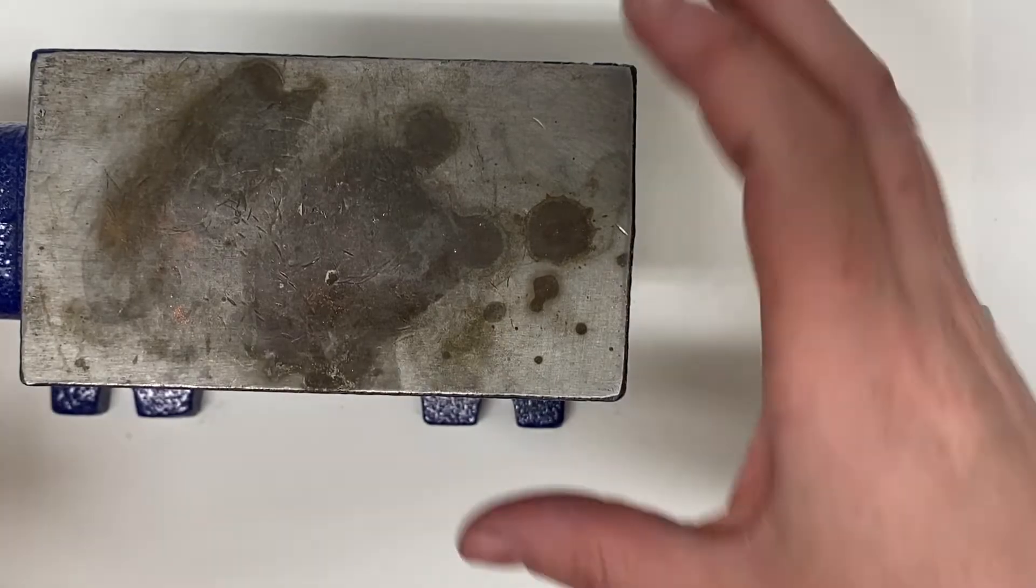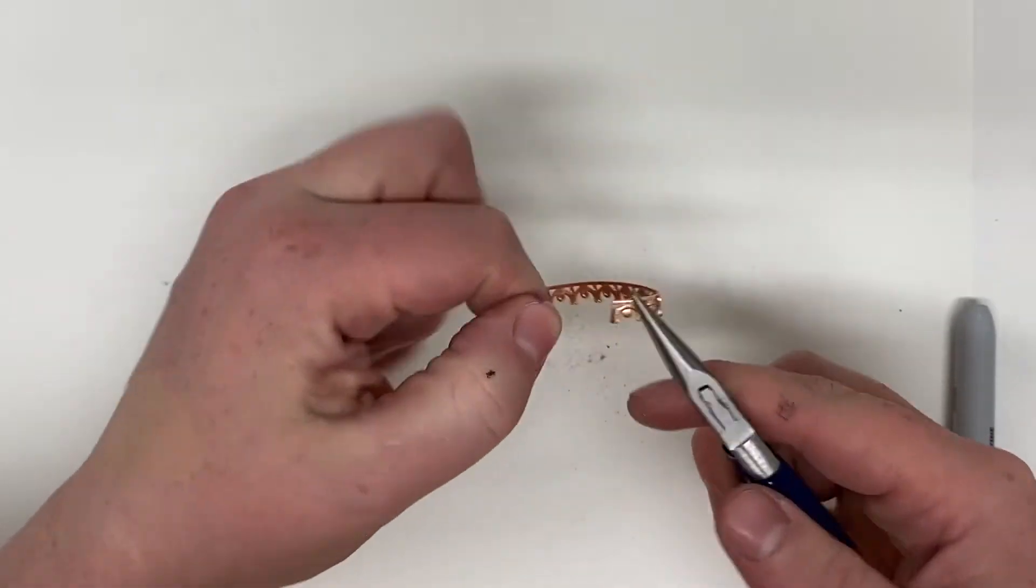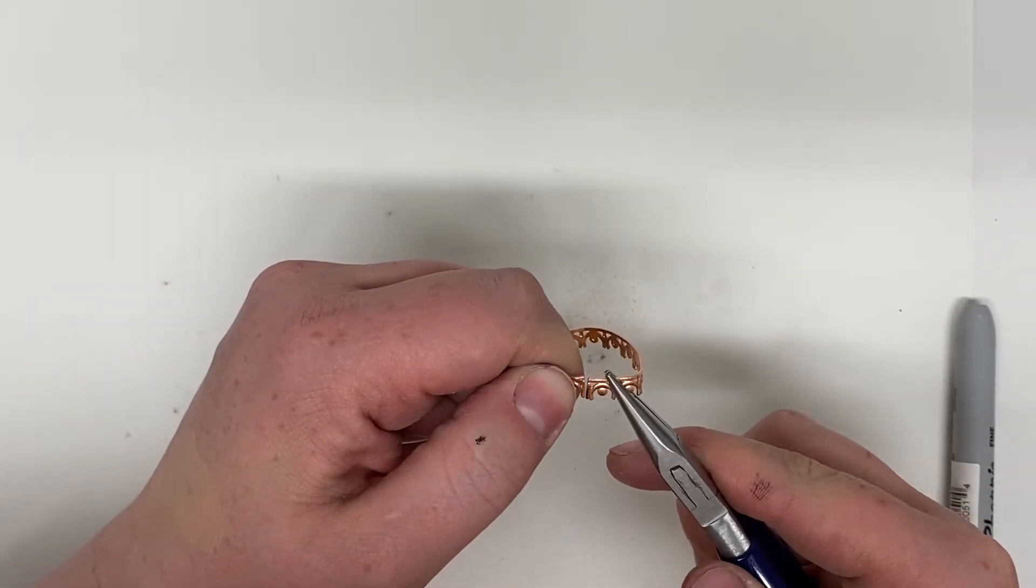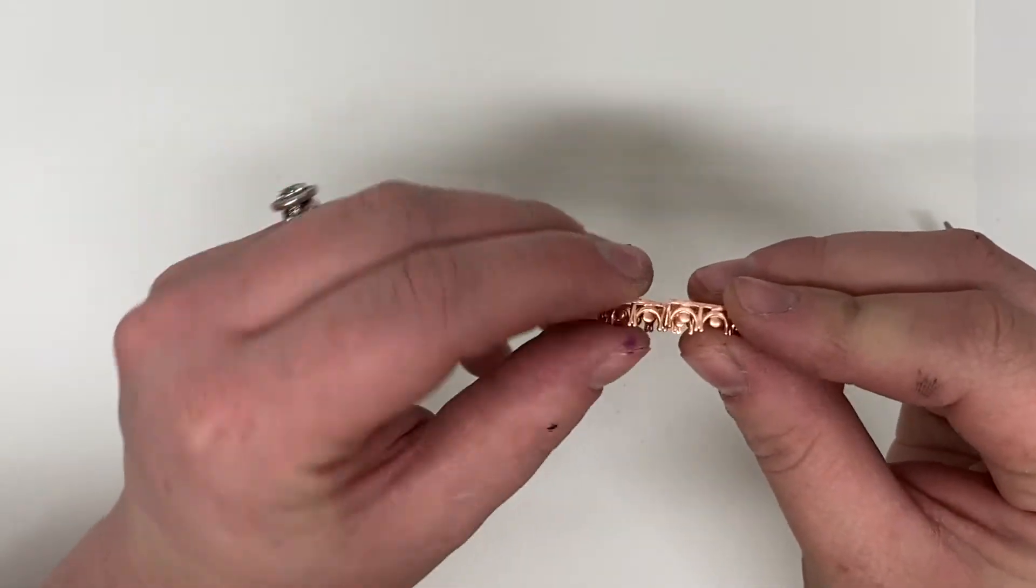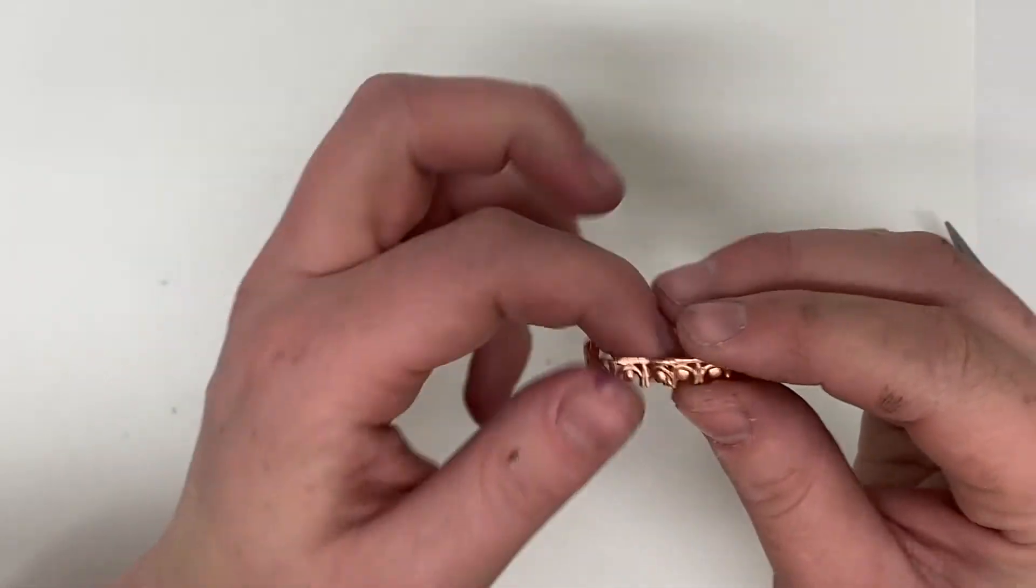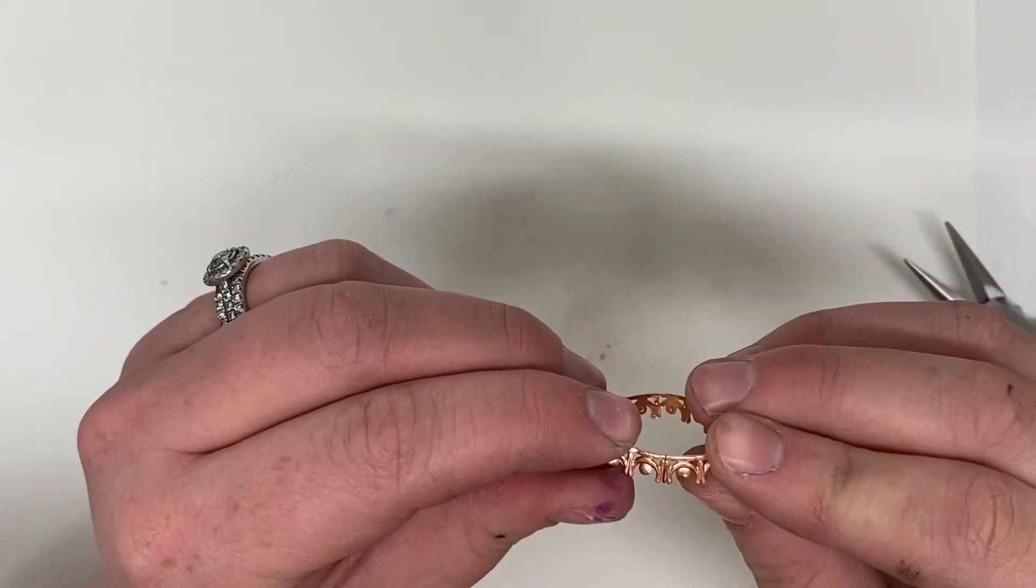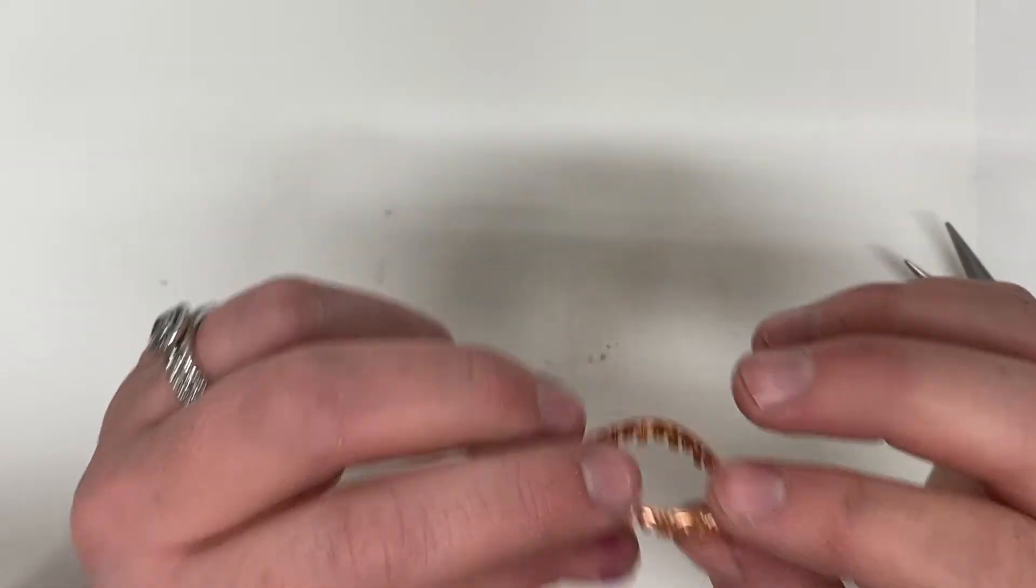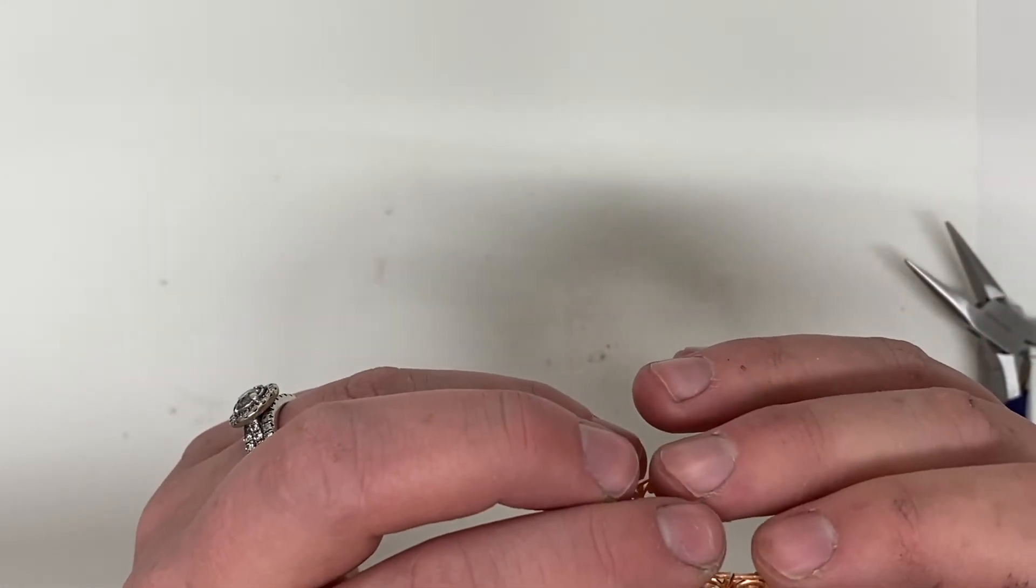Alright, that looks pretty good. After you have filed it, similar to the ring shank, you're going to make them meet precisely. And again, I like to kind of bend it past itself. This wire is a lot thinner than the ring shank, so it's going to take a little bit more finagling or working with it to make it meet perfect.